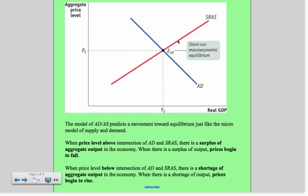When the price level goes below the intersection of aggregate demand and aggregate supply, there's a shortage of aggregate output in the economy. When there's a shortage of output, prices begin to rise. So this model is very similar to the model we studied in micro.